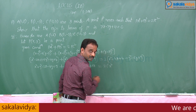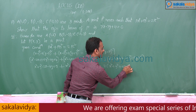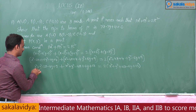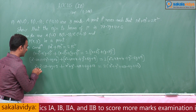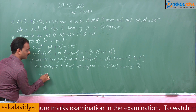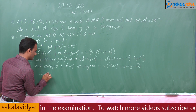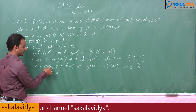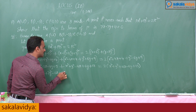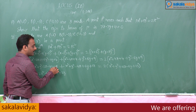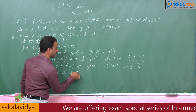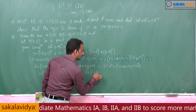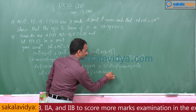Collecting terms on the left side: x² + y² terms give 2x², y² terms give 2y². For x terms: -2x - 4x = -6x. For y terms: -4y + 6y = +2y. Constants: 5 + 13 = 18. So the left side is 2x² + 2y² - 6x + 2y + 18.